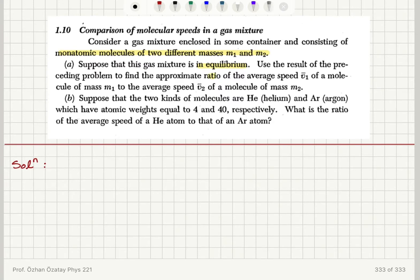We would like to know the ratio of the average speeds. Suppose that the two kinds of molecules are helium and argon, which have atomic weights of 4 and 40 respectively. We have M1 equals 4, M2 equals 40.